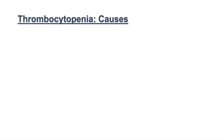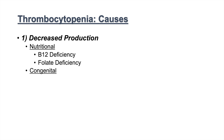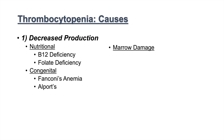Looking more in-depth at the causes within each category: in decreased production, nutritional causes include B12 deficiency and folate deficiency, both of which can lead to decreased thrombocyte production. Congenital causes are also an issue — if there are congenital problems in producing thrombocytes, we can have low counts. These include Fanconi's anemia and Alport's syndrome.